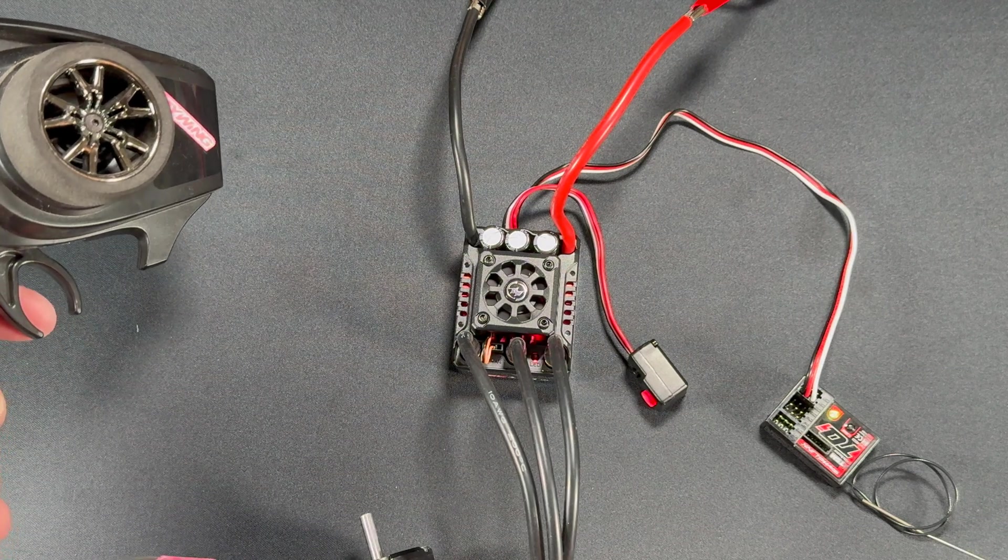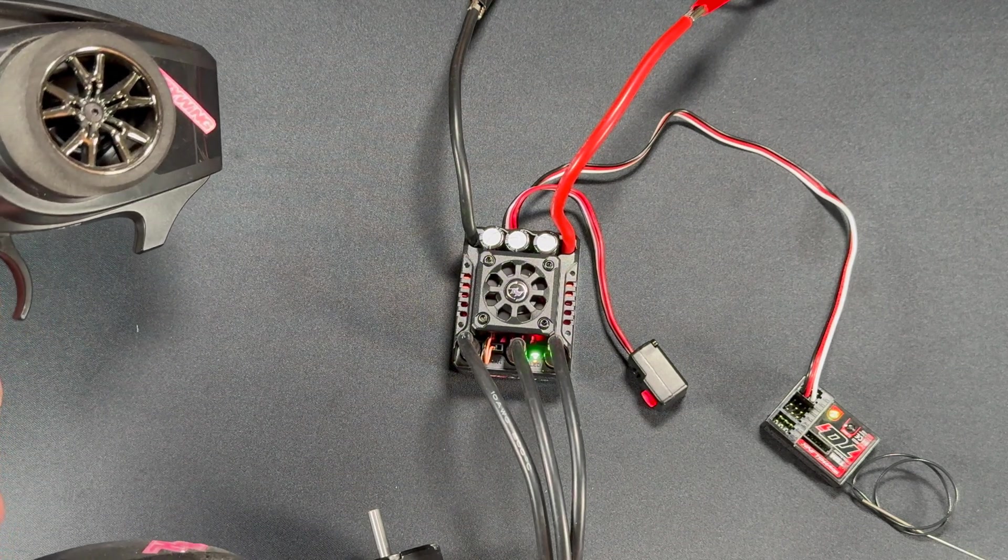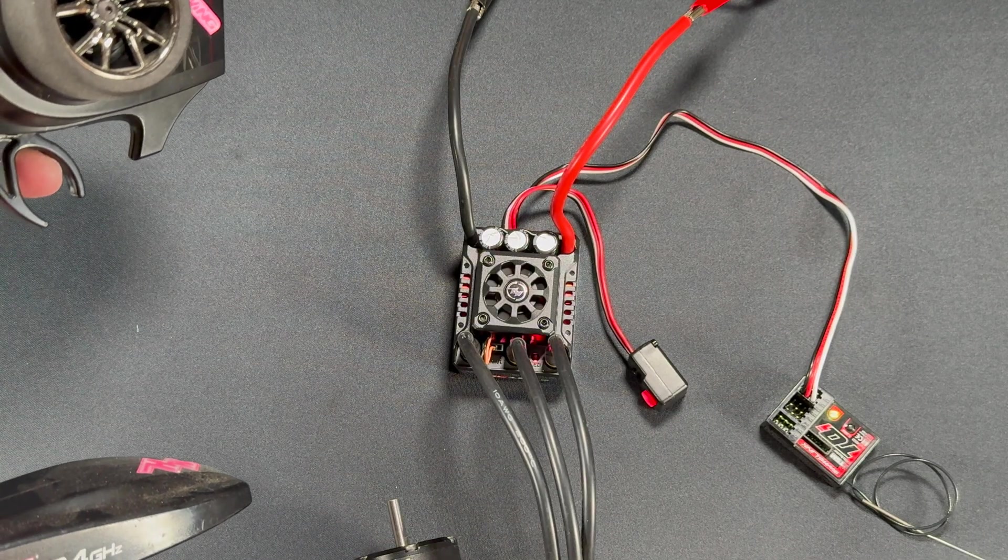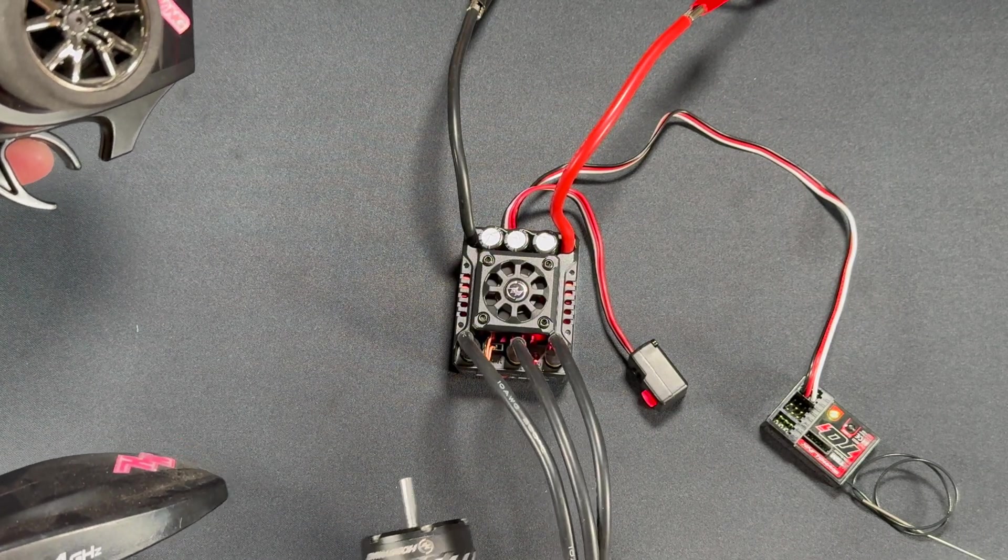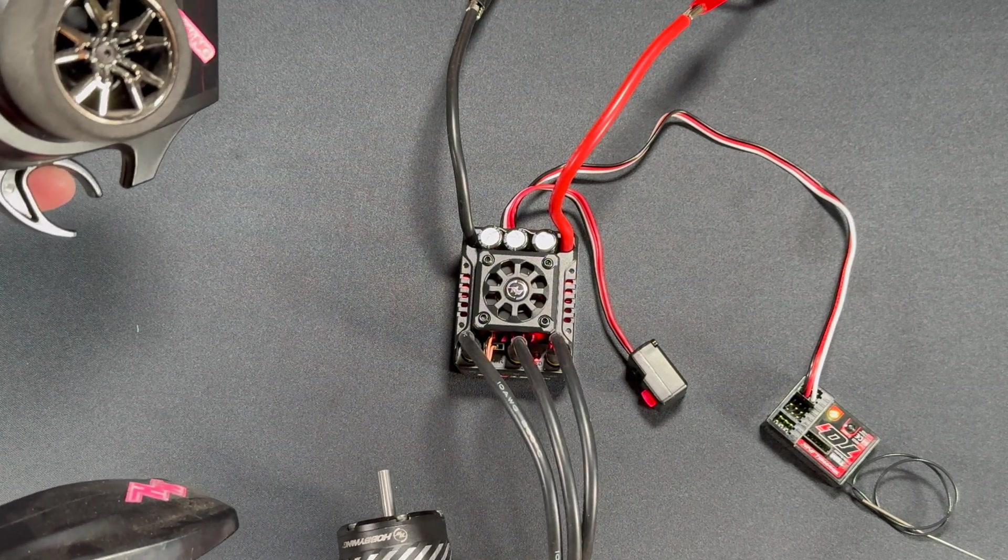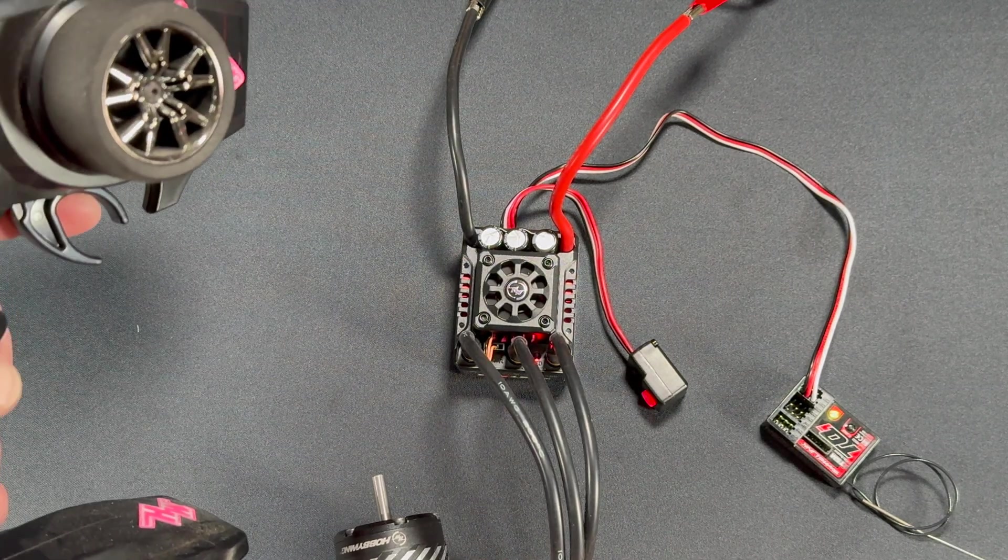So at neutral you get no light. As you give it throttle, you get a red light. And as you get the full throttle, you get a green light. As you do the reverse, you get the same thing, you get red. And then because it defaults to not full reverse on the speed control settings, you won't see a green light because it's telling you this isn't full speed reverse.